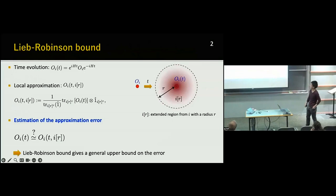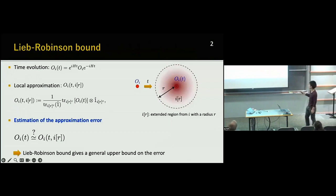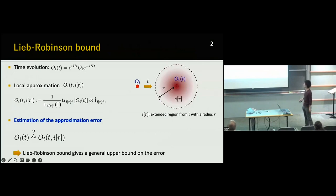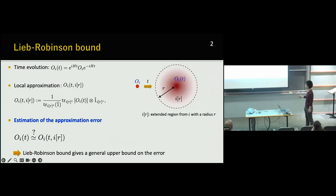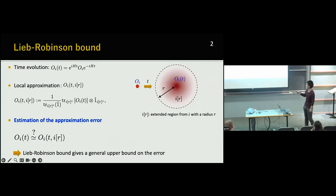I first show the basic notion of the Lieb-Robinson bound. The Lieb-Robinson bound roughly characterizes the speed limit of the information propagation. At the mathematical level, we consider the time evolution of a local operator supported on some site i, and consider the time evolution of these local operators. After the time evolution, this operator spreads outside the site i and becomes non-local. We aim to approximate this time evolution of the local operator onto some ball region with radius r centered at i. Our problem is to estimate the approximation error from the local approximation of the time-evolved operators.